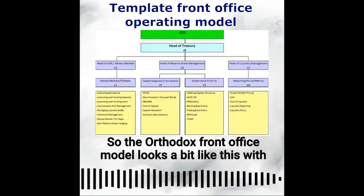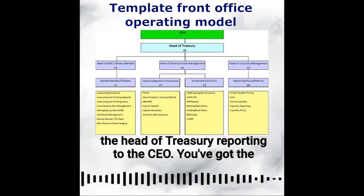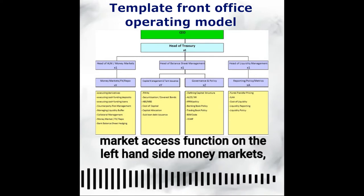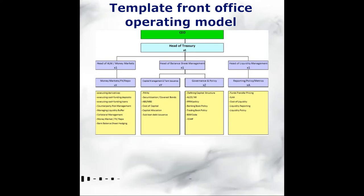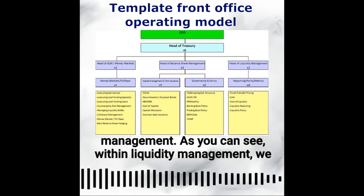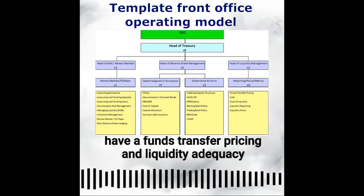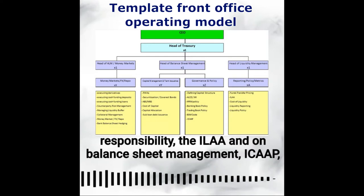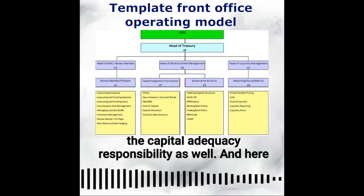The orthodox front office model looks like this, with the head of treasury reporting to the CEO. You've got the market access function on the left-hand side — money markets and the hedge book — then balance sheet management and also liquidity management. Within liquidity management, we have a funds transfer pricing and liquidity adequacy responsibility, the ILAP. And on balance sheet management, also the ICAP — the capital adequacy responsibility as well.